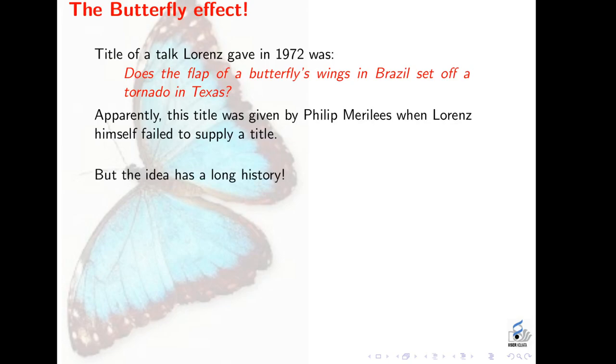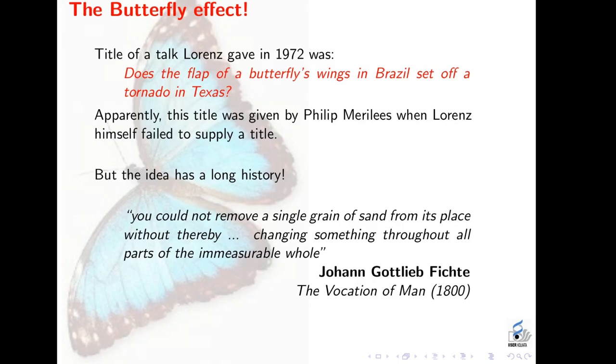This idea, however, was not really very new. This idea had a long history. This was the first time you were really seeing this in a well-controlled scientific context. But, long ago, for example, in the 1800s, the philosopher Johann Gottlieb Fichte, in the vocation of man, wrote: you could not remove a single grain of sand from its place without thereby changing something throughout all parts of the immeasurable whole. But what philosophy dreamt of a long time ago, science has shown that that really is true. It works out that a very tiny effect somewhere can produce a huge effect somewhere entirely different.